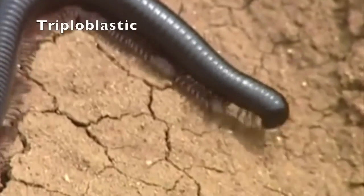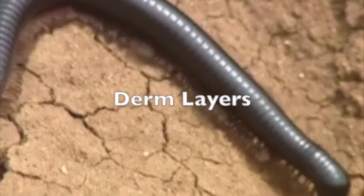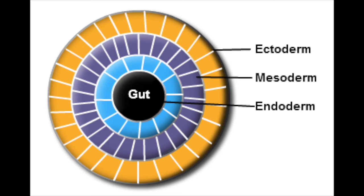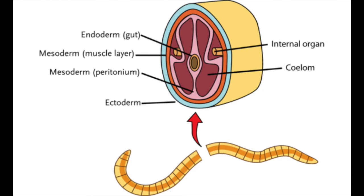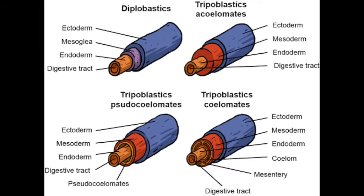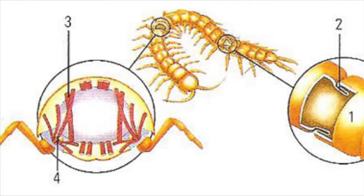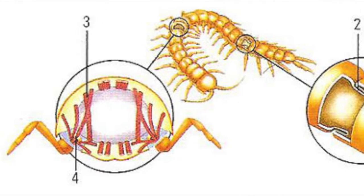All arthropods are triploblastic, meaning that they have three distinct germ layers in their bodies. They have endoderm, where their digestive system is; mesoderm, which forms the internal organs; and ectoderm, which comprises the skin, exoskeleton, and nervous tissue. These all develop from the embryo.